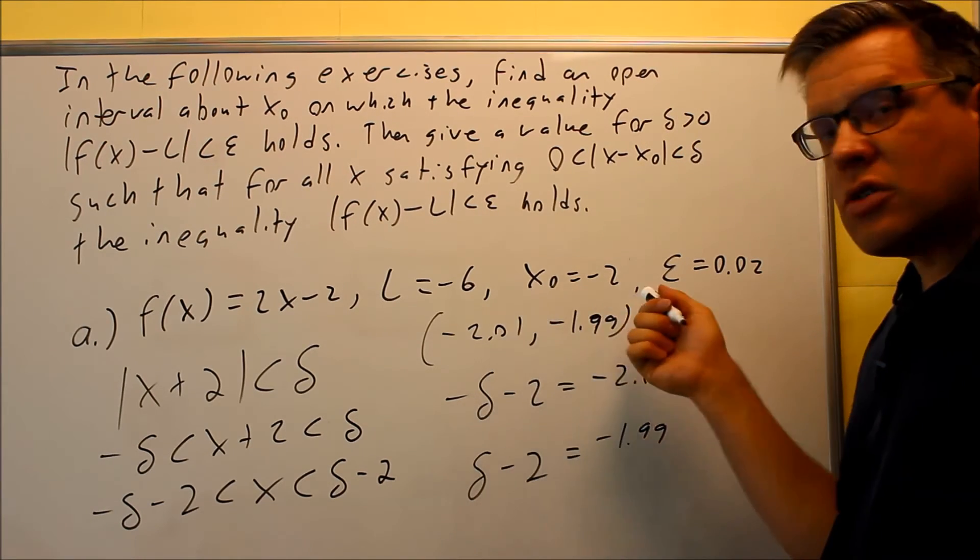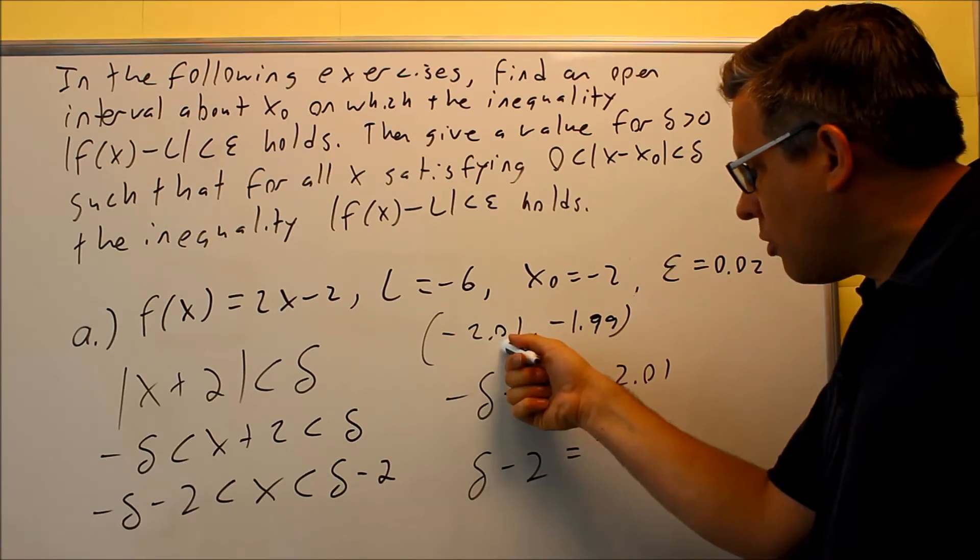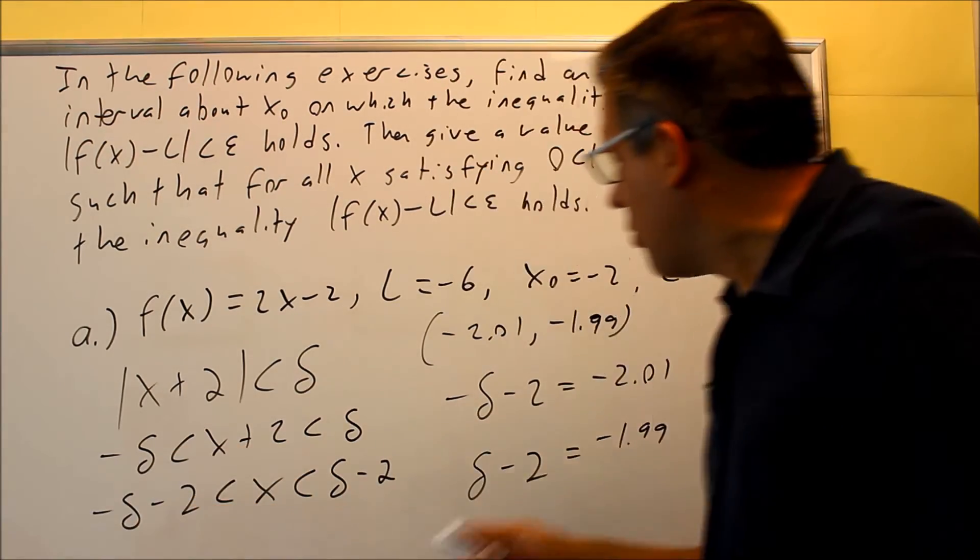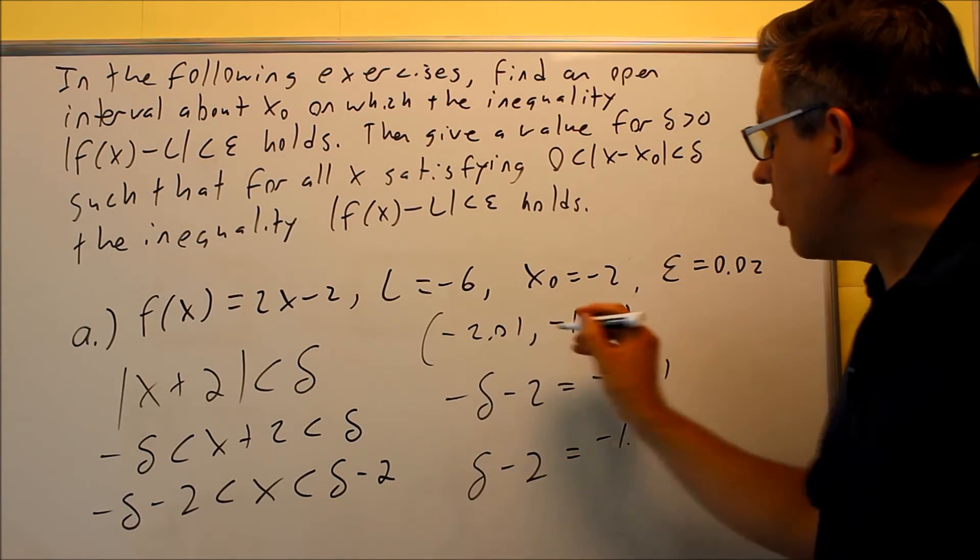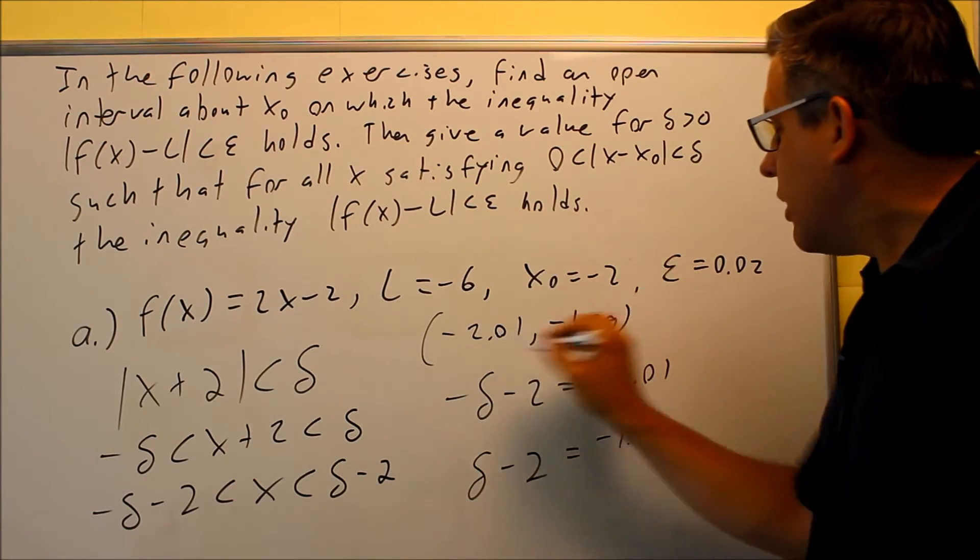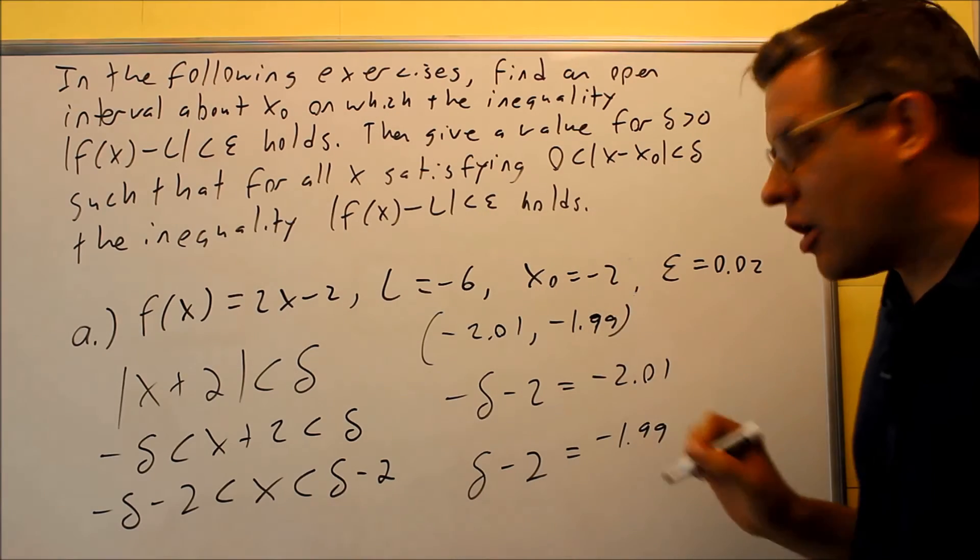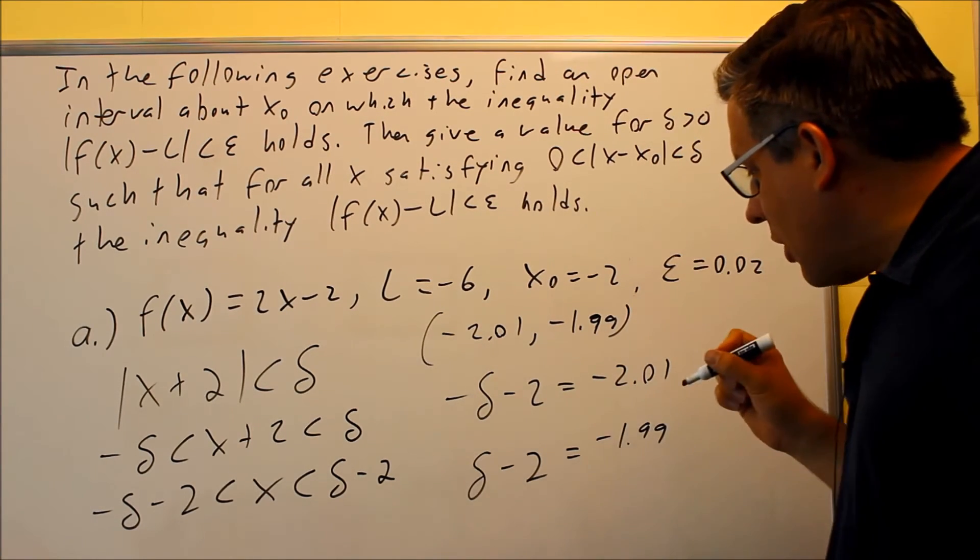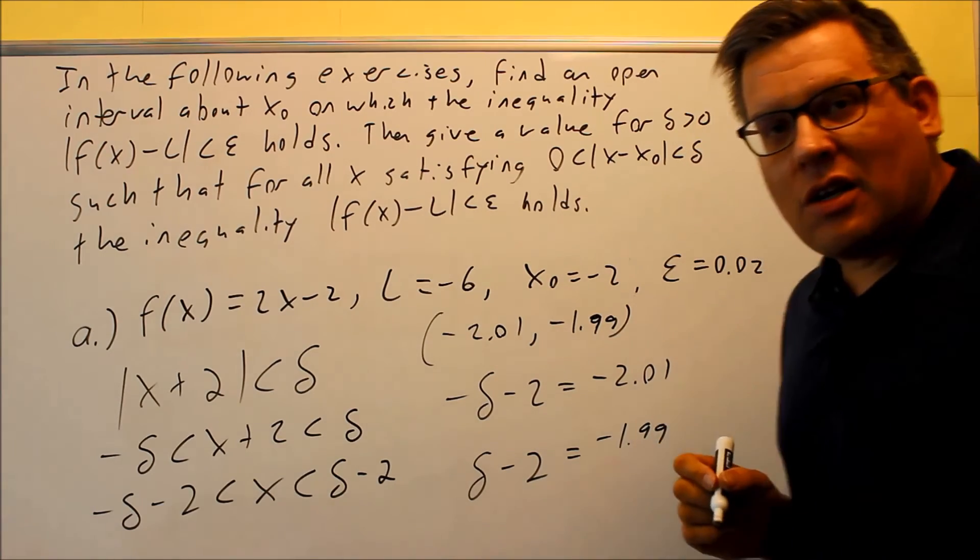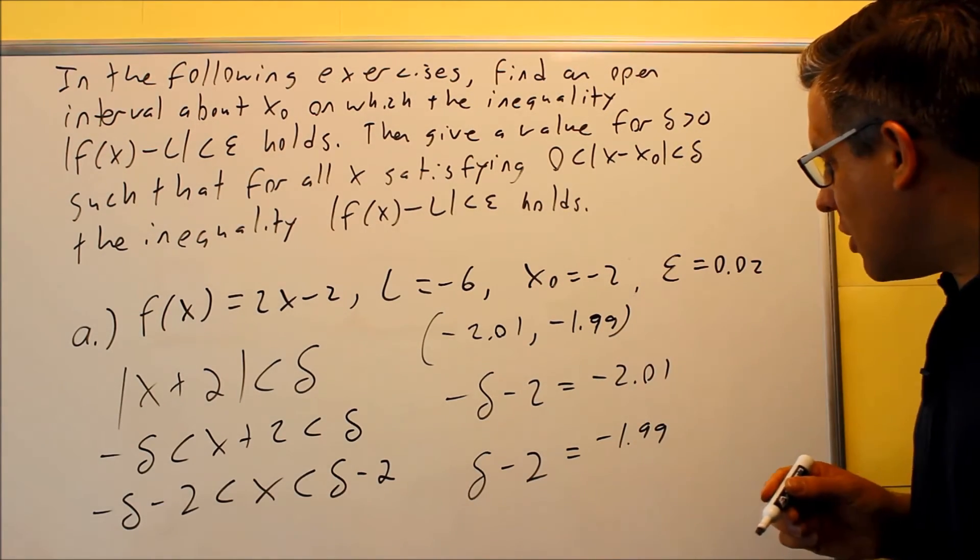Be careful with the numbers here. This is a smaller number, the smaller number goes with this smaller number, the larger number goes with the larger number here. So make sure you don't get those confused. You want to make sure you have this inequality written in order from smallest to largest. So, once you solve both of these, then you're going to be able to get what delta is, and you should get the same number for each of these.